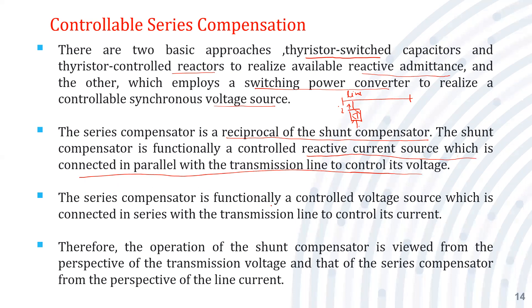For the series compensator, it is functionally a controlled voltage source, synchronized with the transmission line. The shunt compensator provides controlled reactive current, whereas the series compensator is a voltage source connected in series with the transmission line to control its current. The series compensator injects a variable voltage into the line.